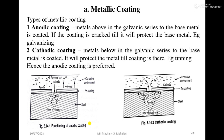Metallic coatings are of two types. This is a common exam question — what are the types and why are they preferred. The two types are anodic coating and cathodic coating. In anodic coating, the coating metal is placed higher than the base metal in the galvanic series. In cathodic coating, the coating metal is placed below the base metal.